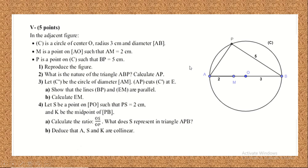Now for the geometric question. Here is a circle C with center O and radius 3 cm, where AB is a diameter. Let P be a point on this circle such that PB = 5 cm, and M is a point on segment AB with AM = 2 cm. Since P lies on the circle and AB is a diameter, the inscribed angle APB = 90°. Therefore triangle ABP is right-angled at P.